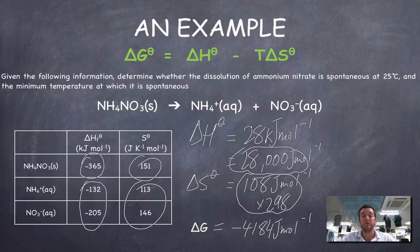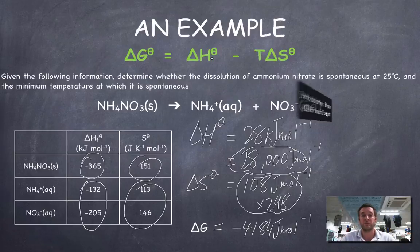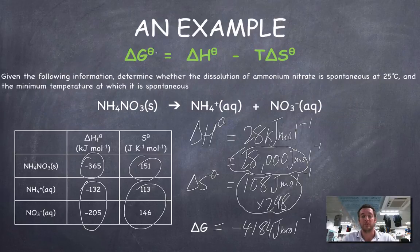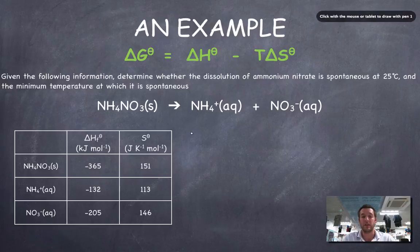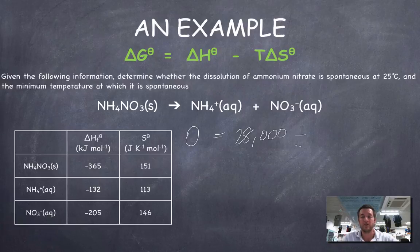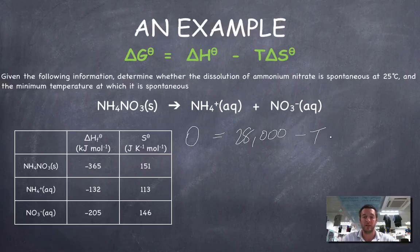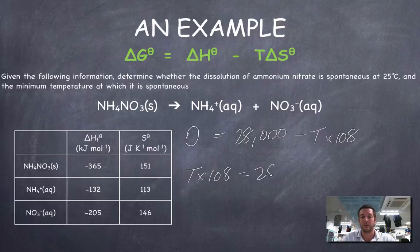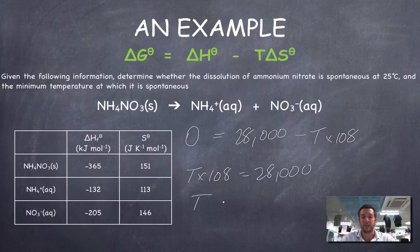The minimum temperature at which it's spontaneous is the temperature that will give us a positive value for ΔG. In other words, we want to find the value of T at which ΔG becomes zero. So we say: 0 = ΔH - T·ΔS. This is the T we're trying to find. We can say T × 108 = 28,000.